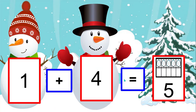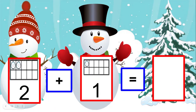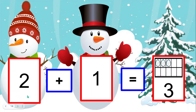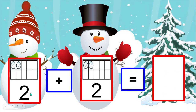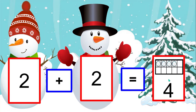One plus four equals five snowballs. Two snowballs plus one snowball equals how many snowballs? Two plus one equals three snowballs. Two snowballs plus two snowballs equals how many snowballs? Two plus two equals four snowballs.